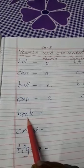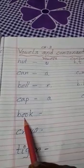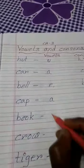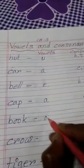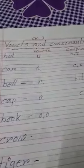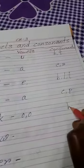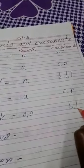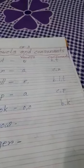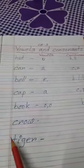So how many O's are here? Two O's are here. So these two O's are vowels. And B and K are consonants.